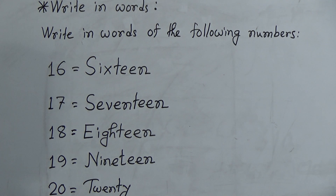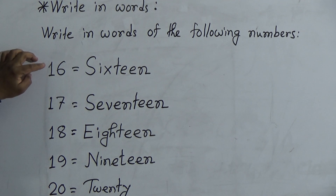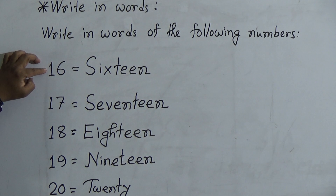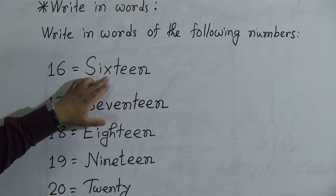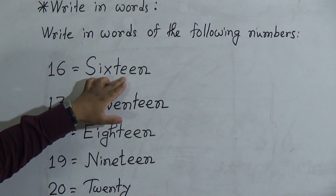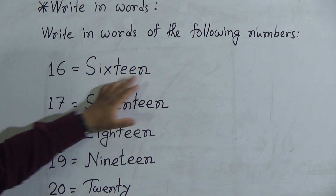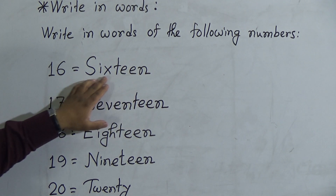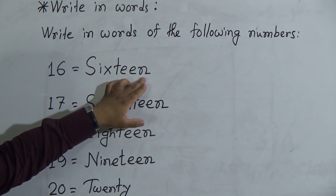Let me say again from 16 to 20. The first number is 16. The spelling of 16 is S-I-X-T-E-E-N, 16.